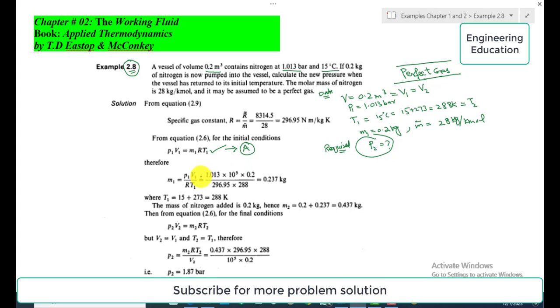Initial and final volumes remain the same, so V₁ = V₂ = V. P₁ is 1.013 bar, converting it to Pascals we multiply by 10⁵. V₁ is 0.2. R is the specific gas constant for nitrogen.